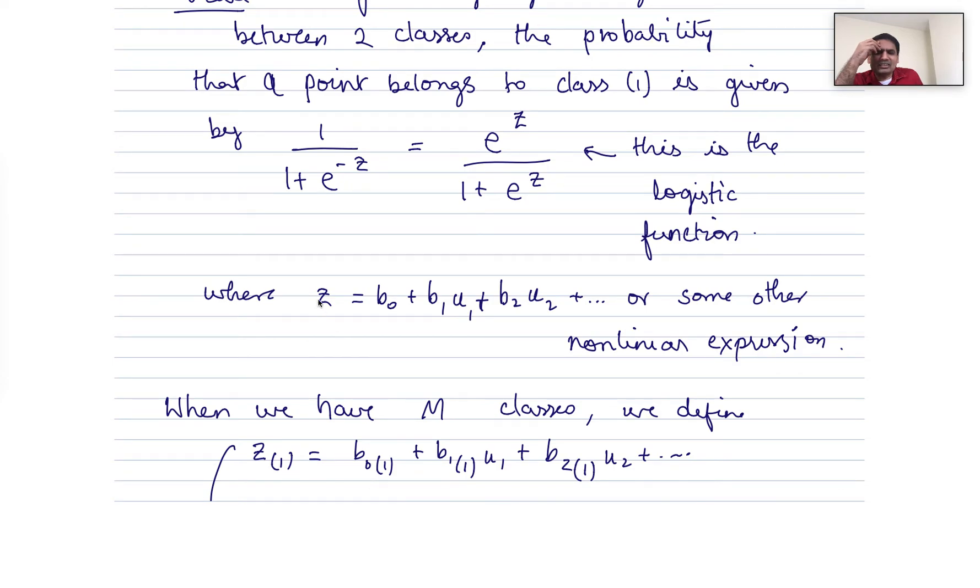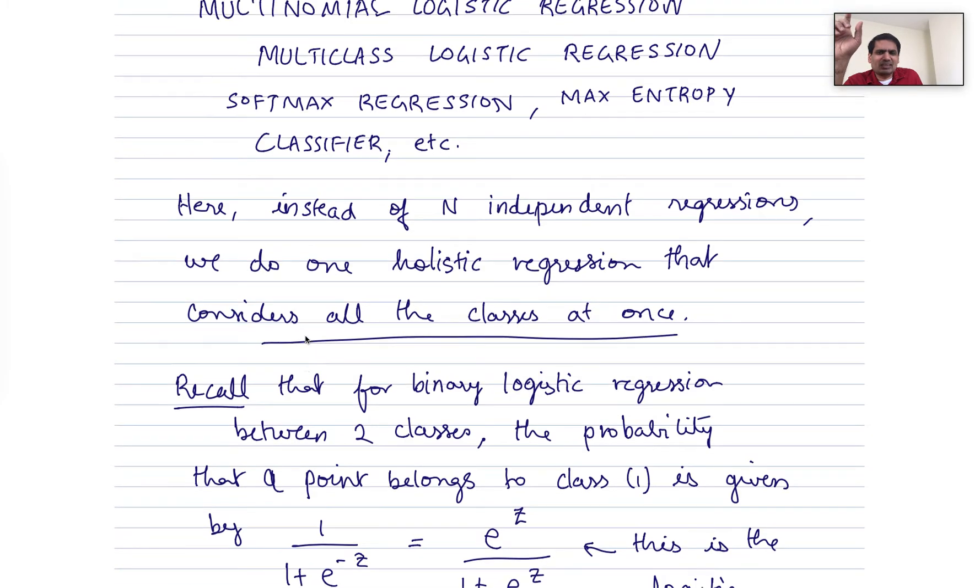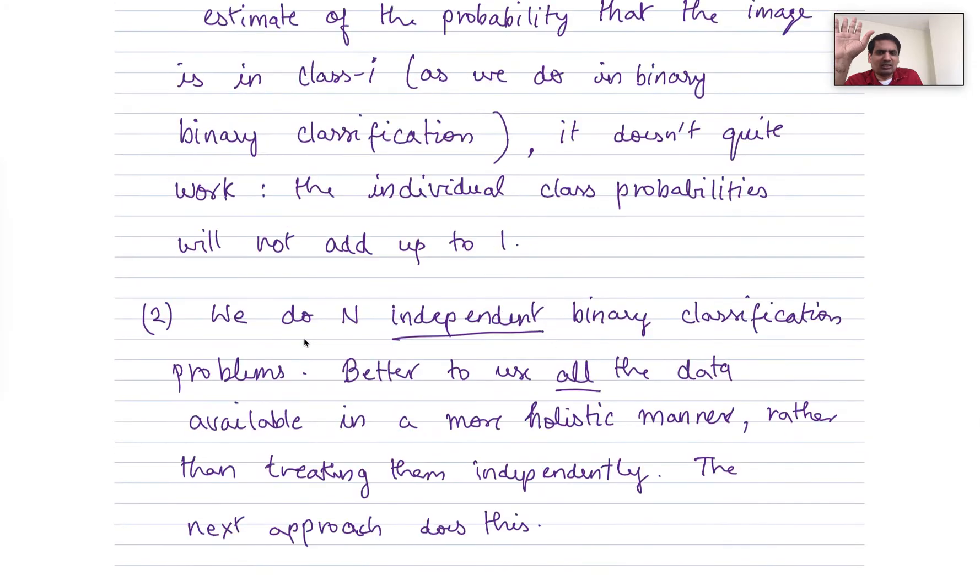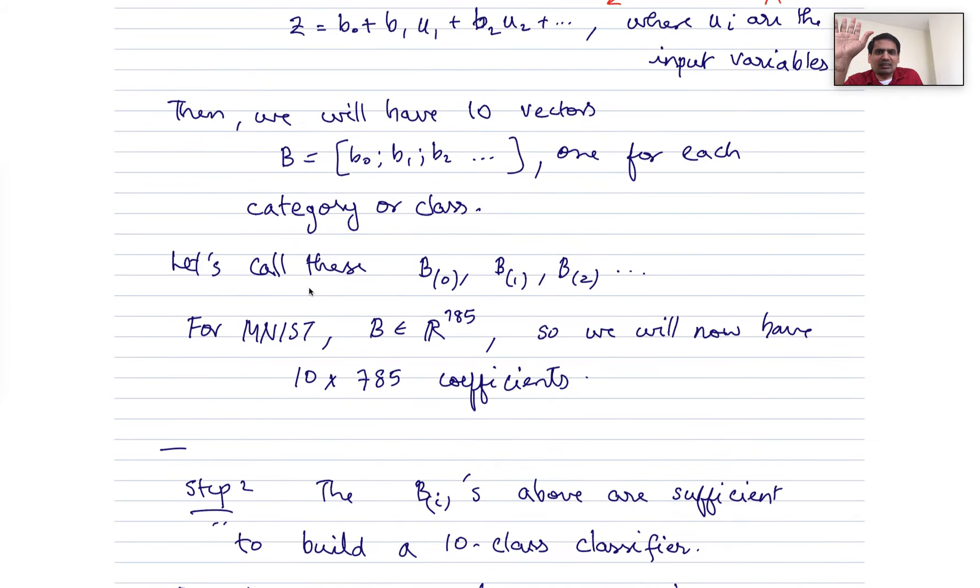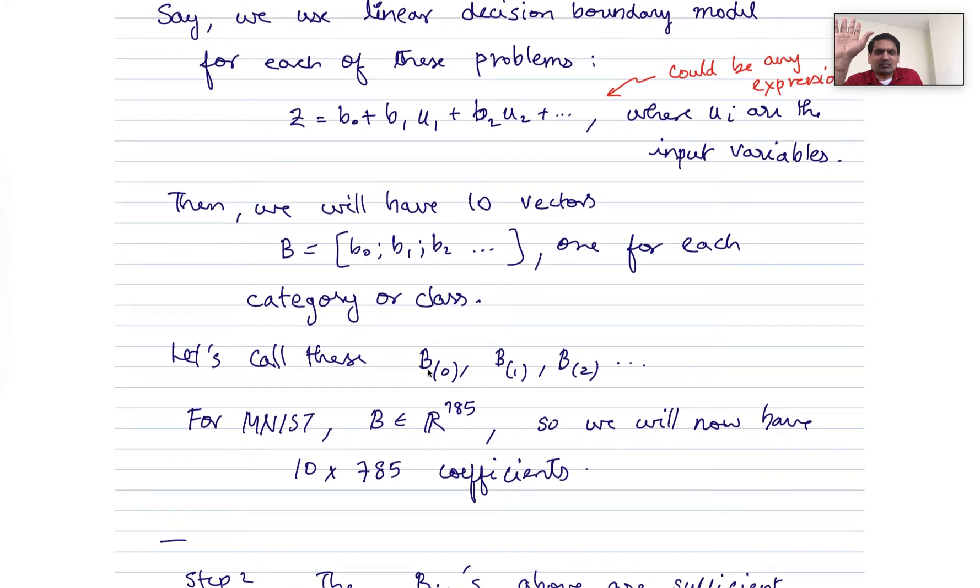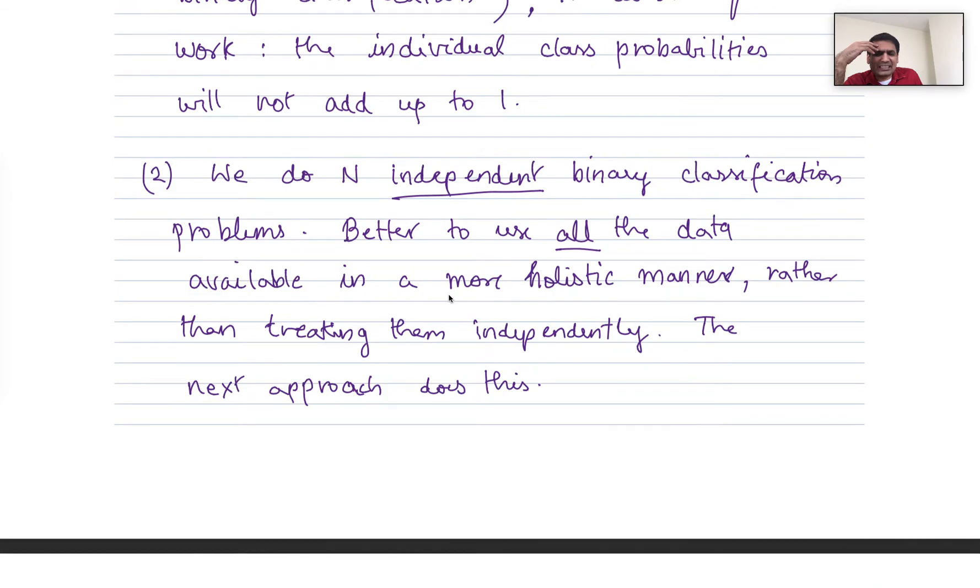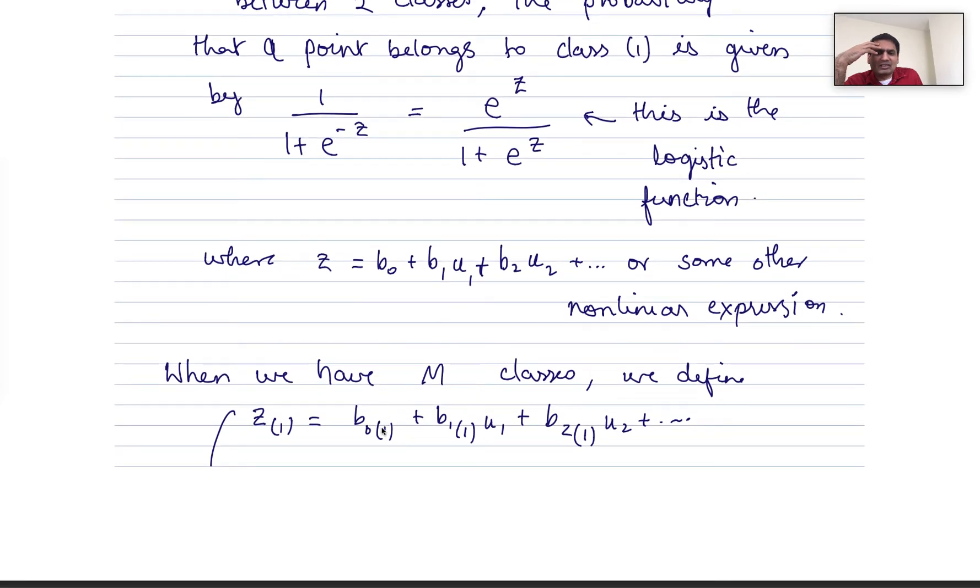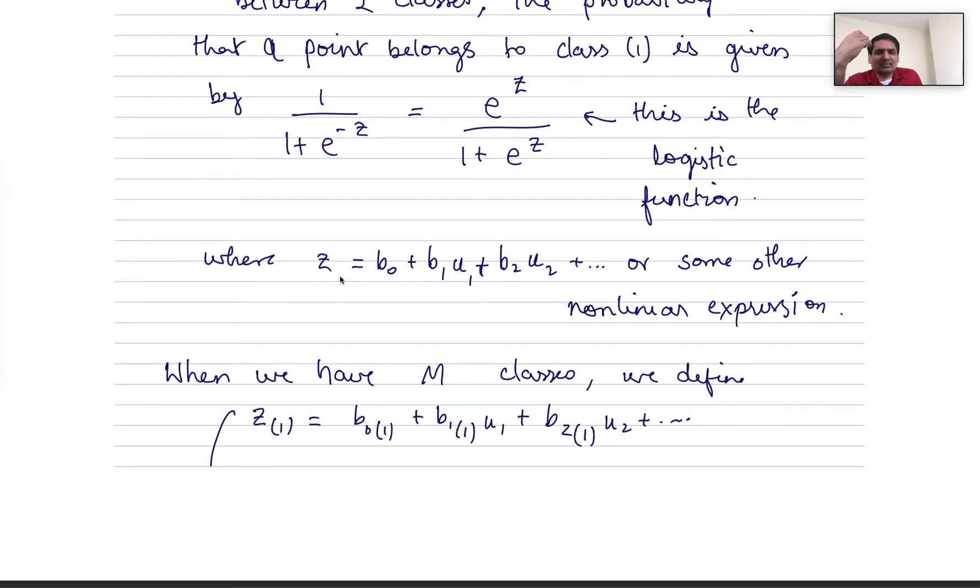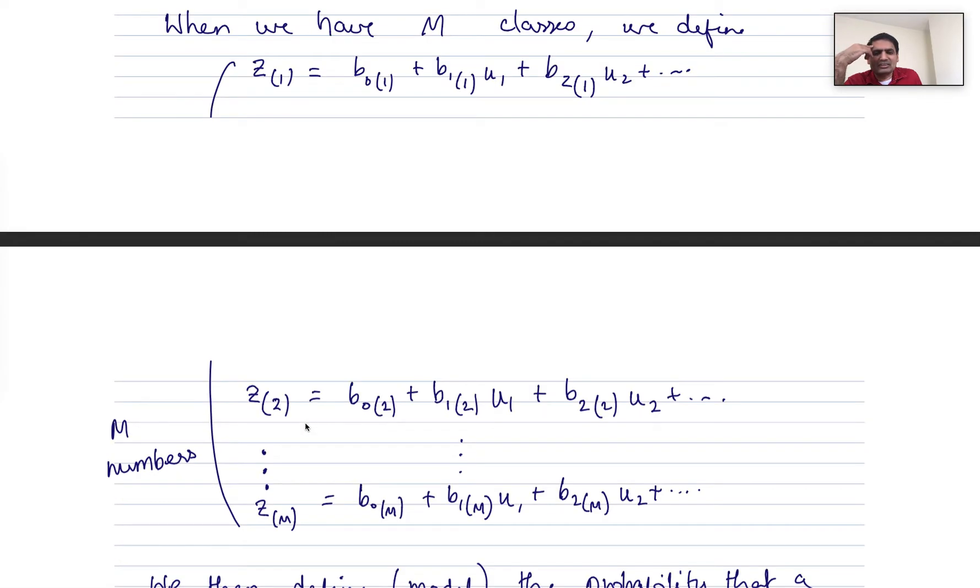Then we define, instead of having just one z, we have m different zs, just like approach number one. It's kind of similar in that way. So in approach number one, we had z values for each of the m classes, where these coefficients, there were different sets of coefficients for each of the m classes. So exactly the same way, we have these coefficients for each of the m different classes. And we can define a z value for each of the m different classes, which we are going to call z1, z2, z3, etc., until zm. So we have essentially m real numbers.